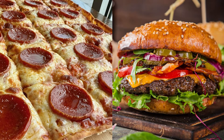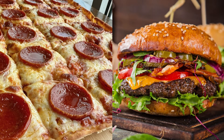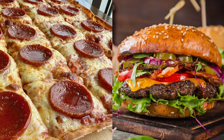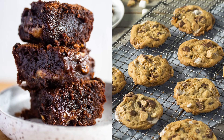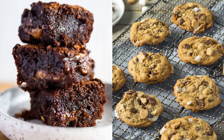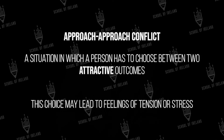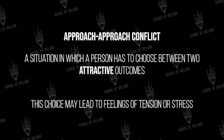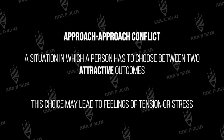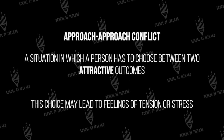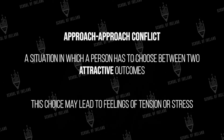Where should you go for dinner? Your favorite pizza place or your favorite burger spot? What about when you get home — should you make brownies or should you make cookies? We make decisions like this all the time. And according to Kurt Lewin, when we have to choose between two attractive outcomes, this is called an approach-approach conflict.